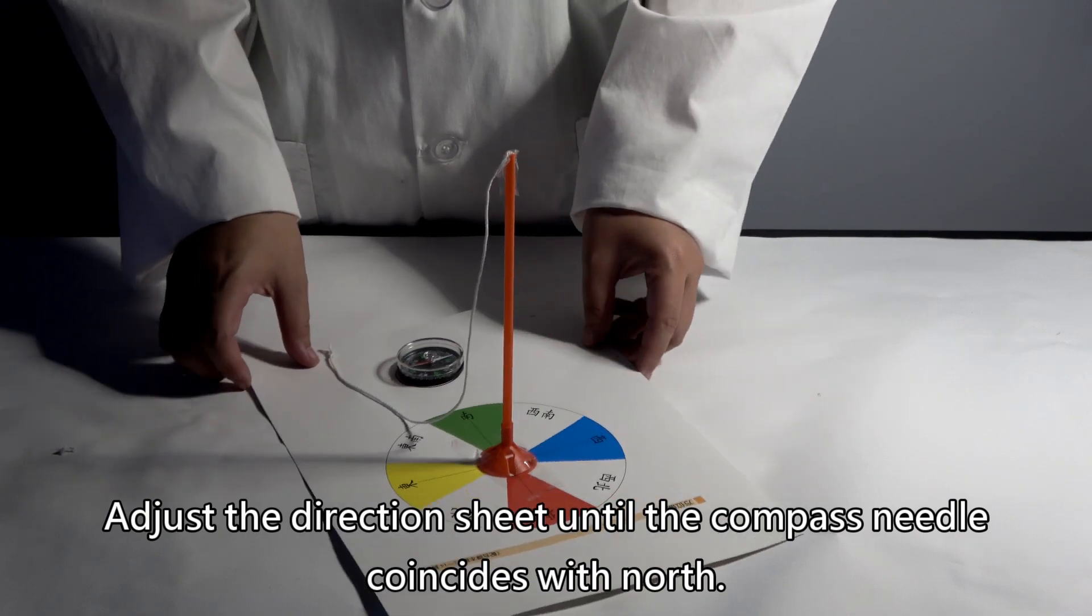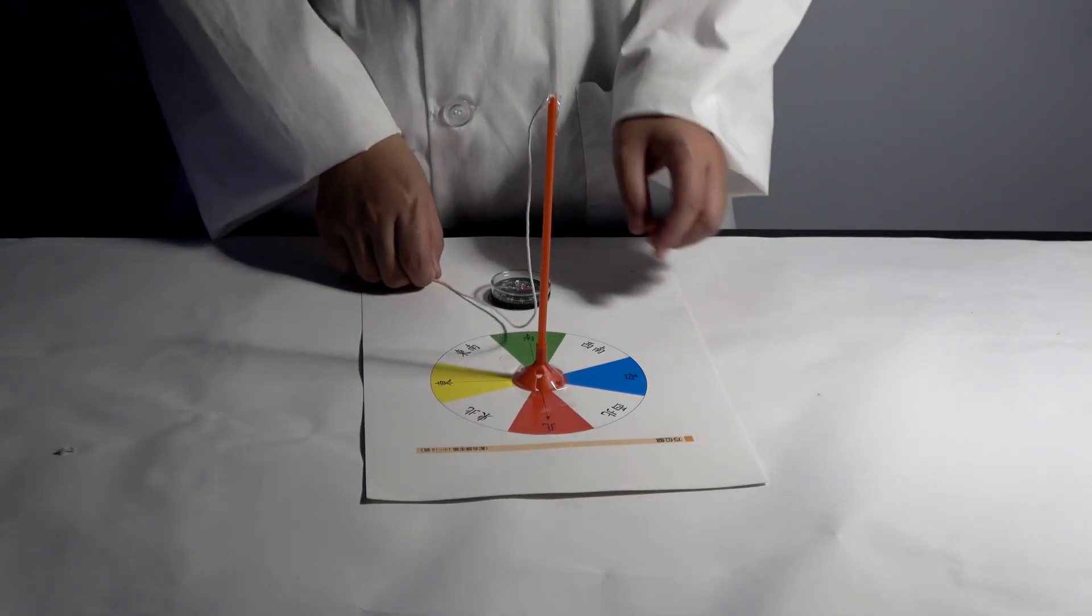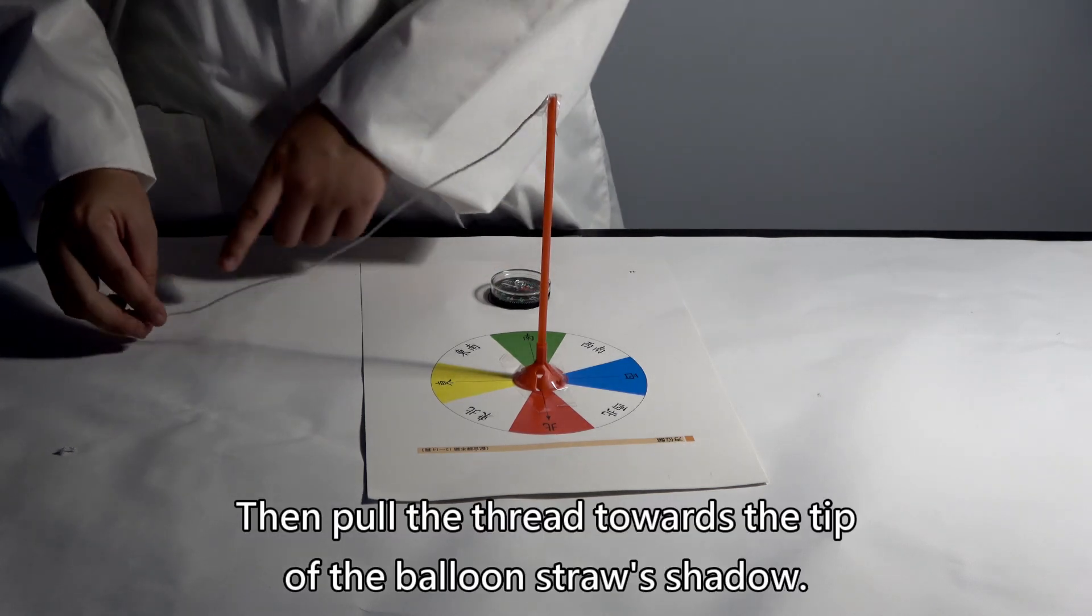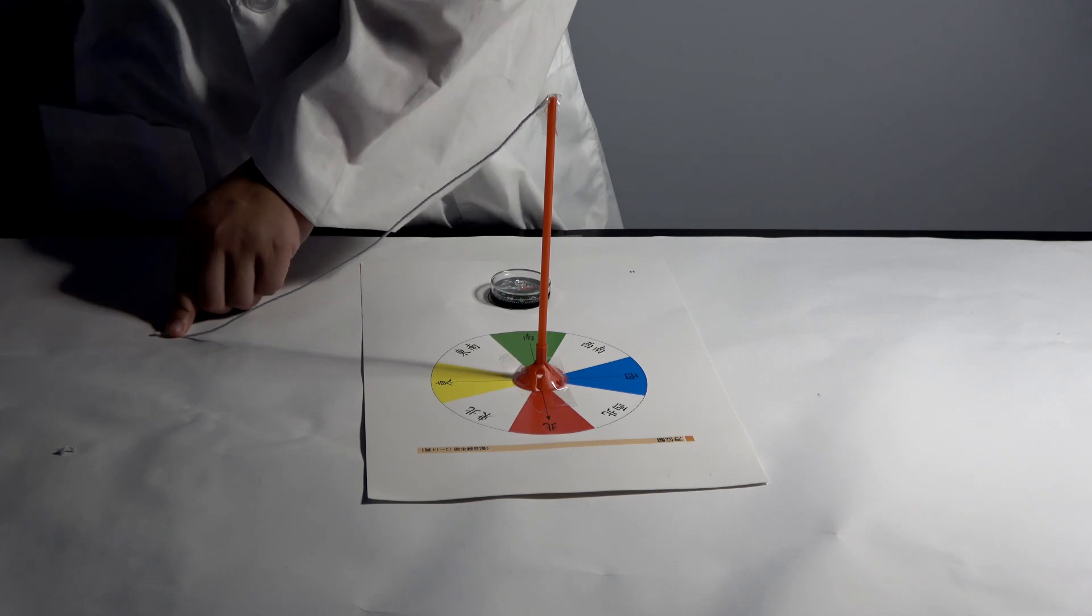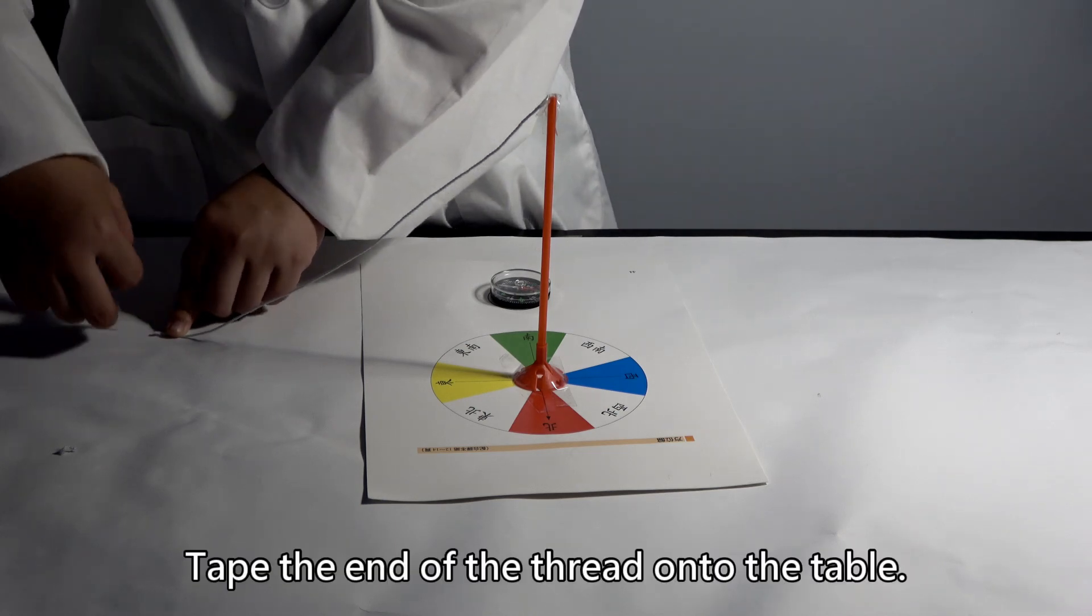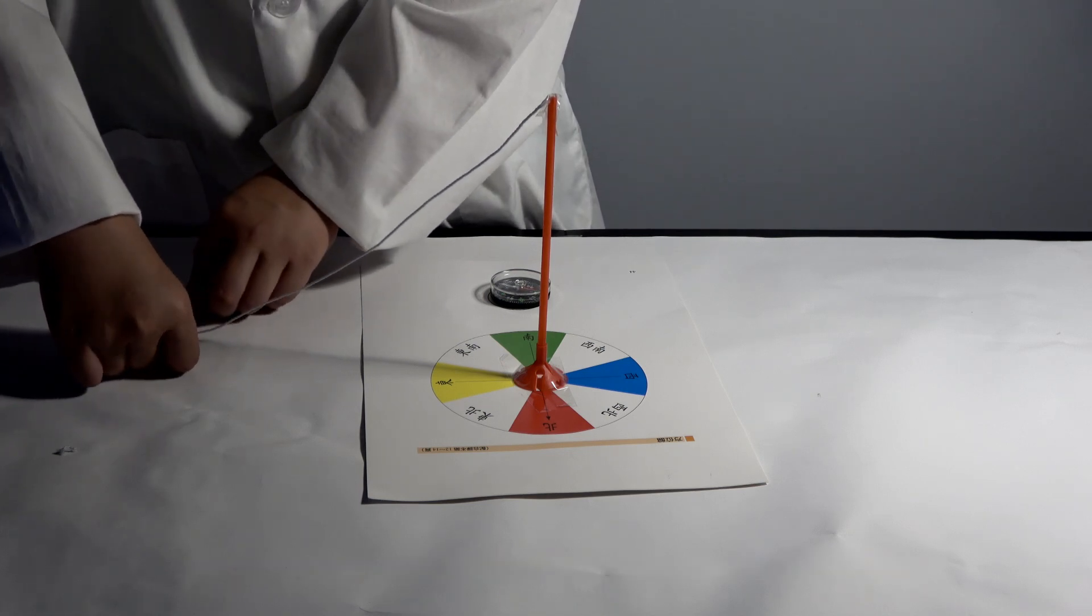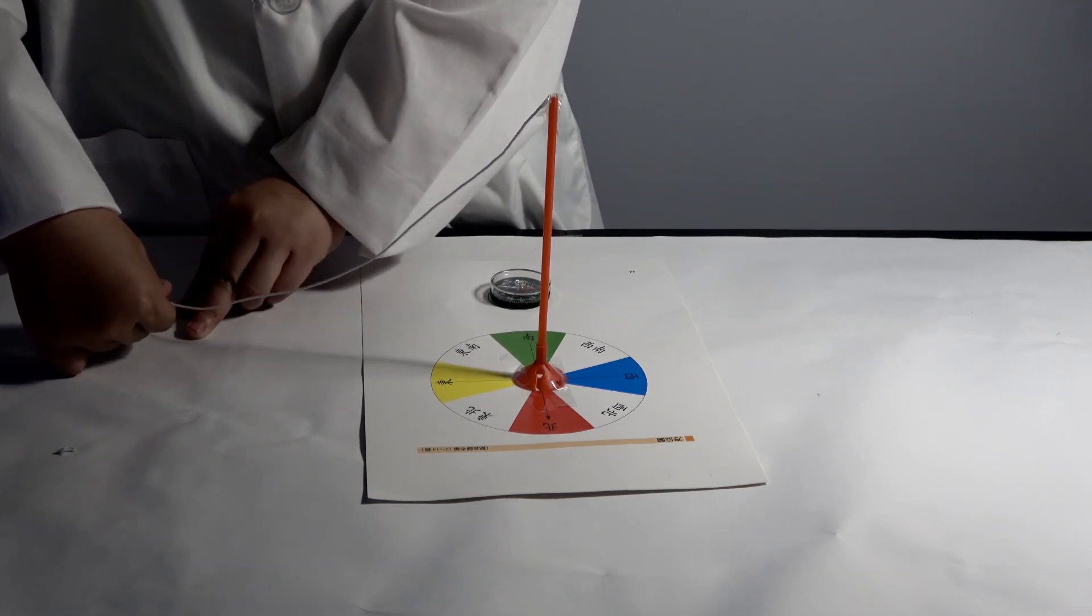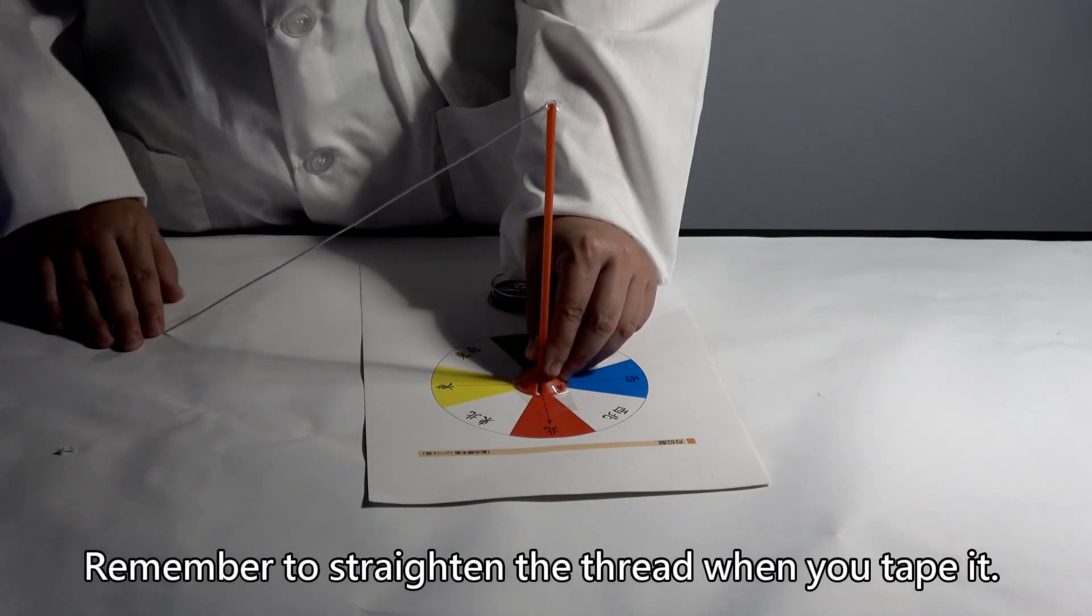Adjust the direction sheet until the compass needle coincides with north. Then pull the thread towards the tip of the balloon straw's shadow. Tape the end of the thread onto the table. Remember to straighten the thread when you tape it.